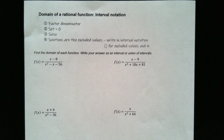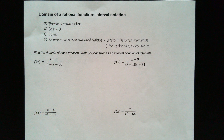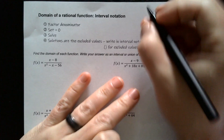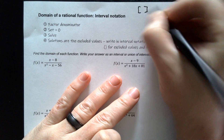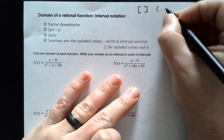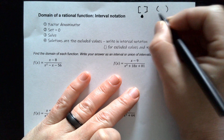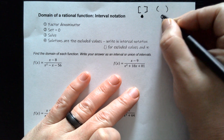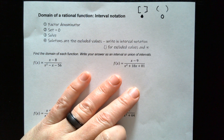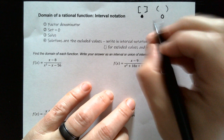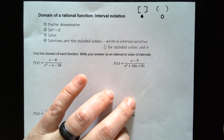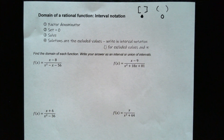In this video, we're going to be looking at the domain of a rational function, and we're going to be writing that using interval notation. Recall that interval notation has either brackets if you include the endpoints, or parentheses if you don't. Brackets correspond to a closed spot on a graph, and parentheses correspond to an open place on a graph. You can have numbers like infinity, and you have to break it up.